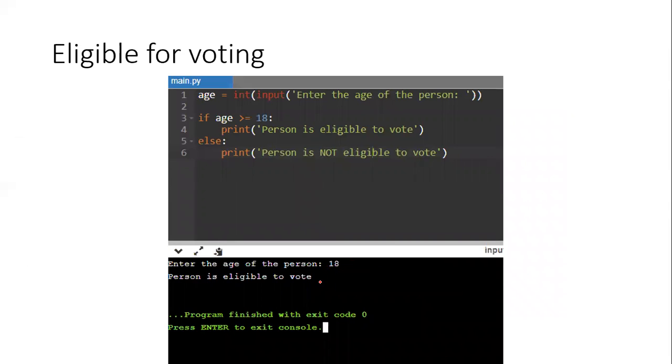One more case that we should look at is what happens when the age entered is 18. So with this condition, remember age greater than or equal to 18. So if we enter 18 now it says that the person is eligible to vote. So that is correct. I've checked all three cases: the case if the person is above 18, the person is below 18, and now if the person is equal to 18. All the cases are covered and I'm now happy that this program will work.